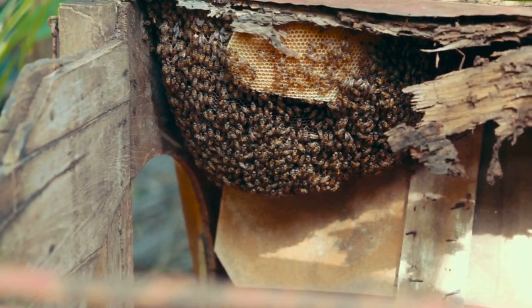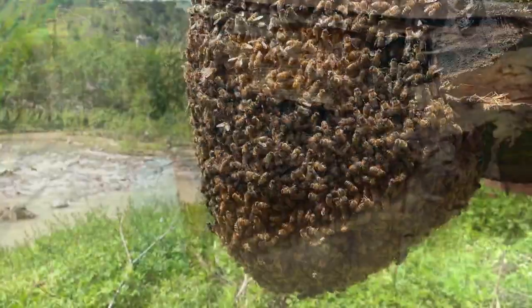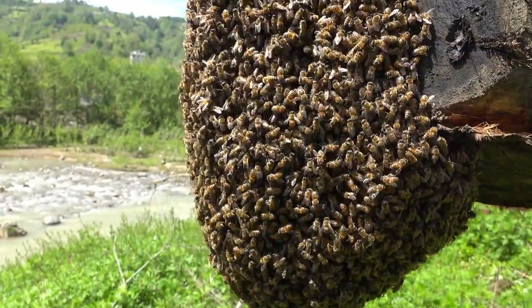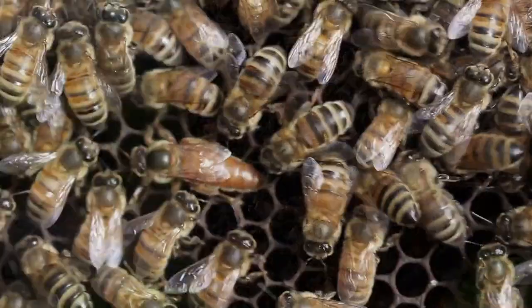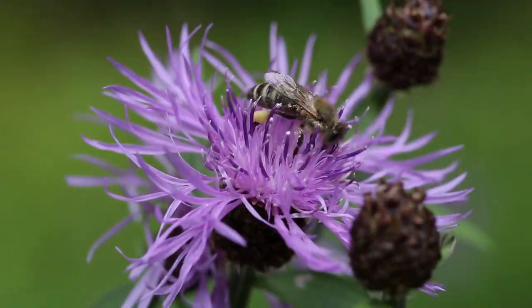Bees live in colonies that can contain up to 60,000 individuals. The colony is made up of three types of bees: the queen, the worker bee, and the drone.